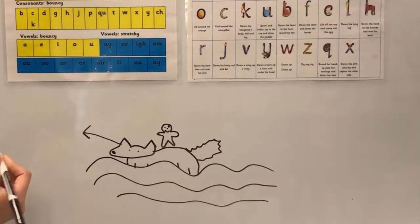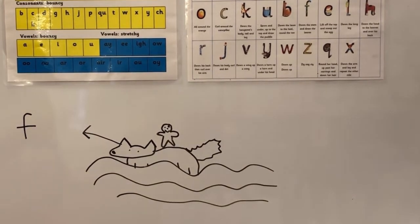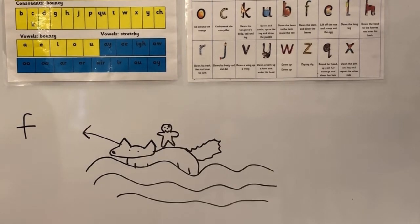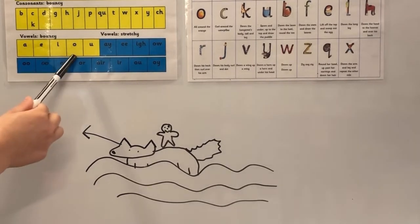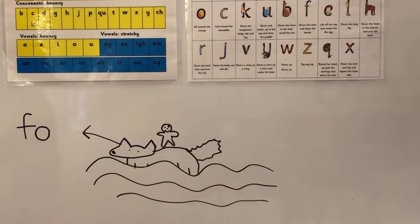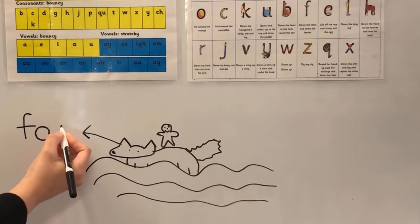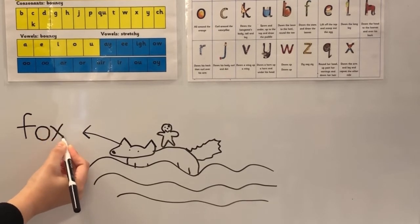Fantastic work. Down the stem and draw the leaves - F. Next sound is O. Can you find it on the sound chart? Well done if you said it's O, and it's right here - all around the orange. Our last sound is X. Can you look for it on the sound chart? Well done - down the arm and leg and repeat on the other side.